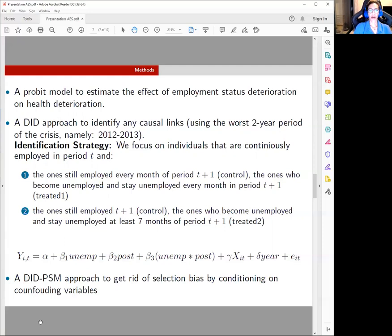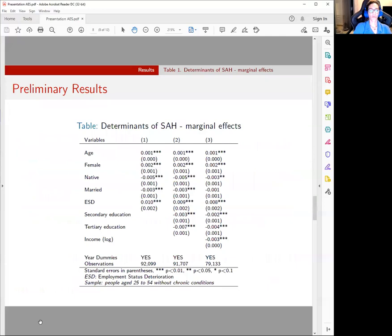Moving on with the third step, we also use a difference-in-differences propensity score matching approach to get rid of selection bias by conditioning on confounding variables.